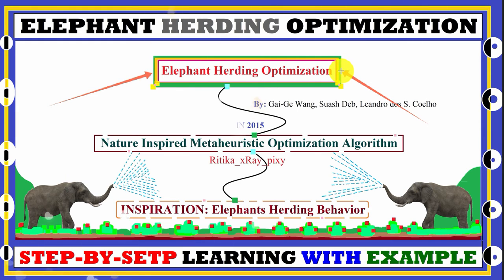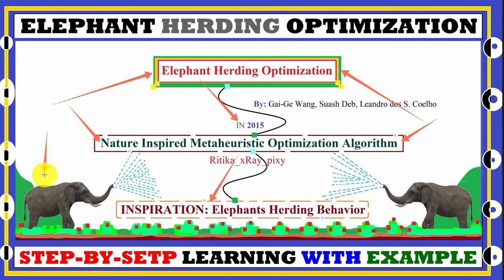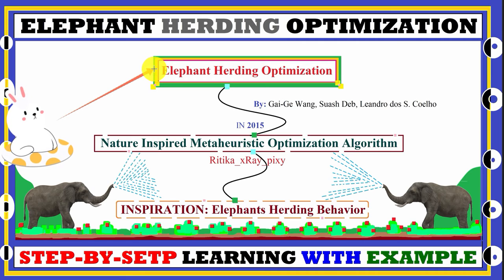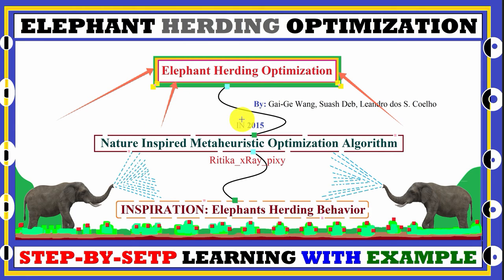The Elephant Herding Optimization algorithm was introduced in 2015. It is a nature-inspired, population-based metaheuristic optimization algorithm that is basically inspired by the herding behavior of elephants in real life. This algorithm provides better results when compared with other metaheuristic optimization algorithms and when tested on different benchmark test functions, so we can use it to solve different optimization problems.